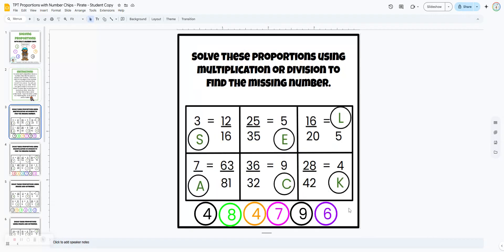They're going to be moving these number chips into place in order to solve the proportion. So we want to find the missing numbers. Here they're either going to be scaling up or scaling down on the first two slides. So here they can see that they're scaling up by multiplying by four. That would mean that this number has to be a four.